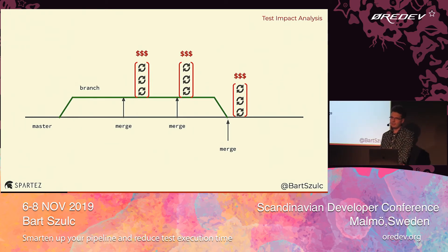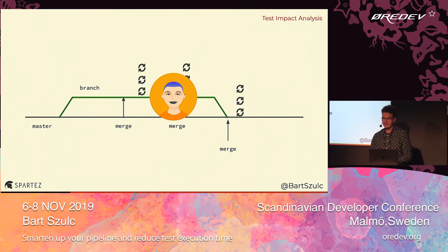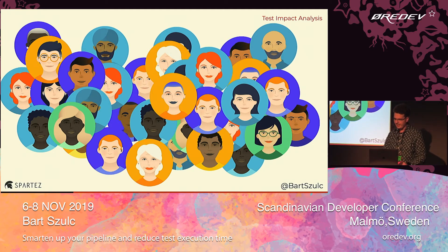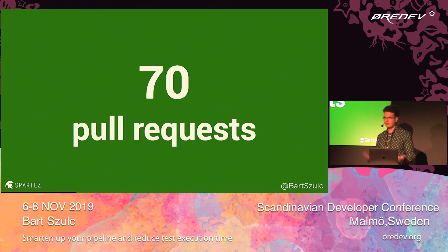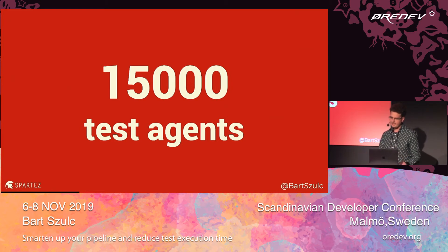Running those tests doesn't only mean we're spending time and delaying feedback — we're also spending a lot of money on the test agents. This is also costing us quite a lot. Now multiply everything I told you by the number of developers working on our product. Every day we create around 70 pull requests that get merged into master. This gives about 15,000 test agents running every single day, executing millions of tests.